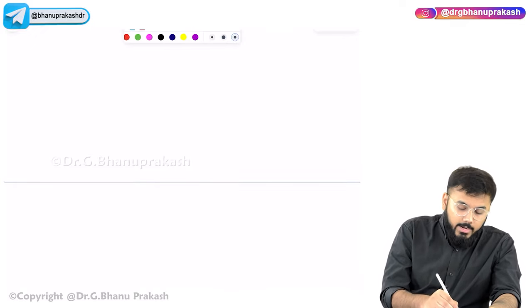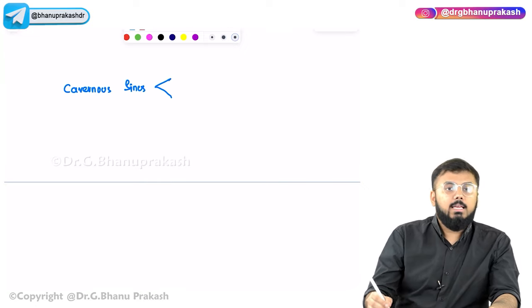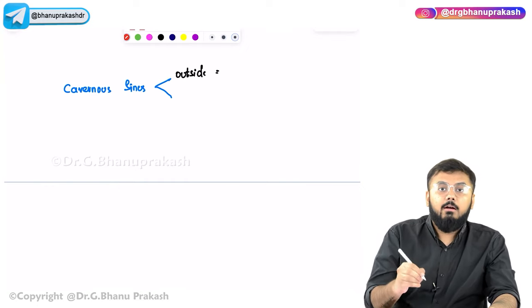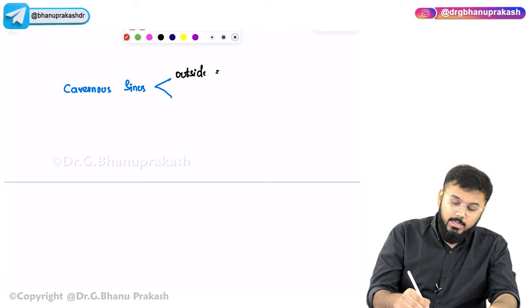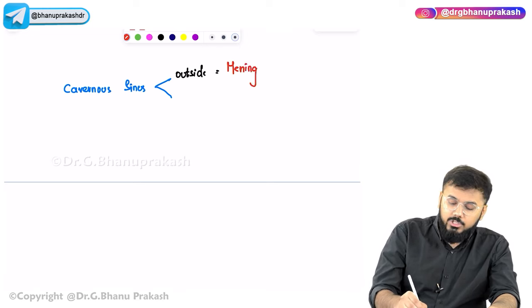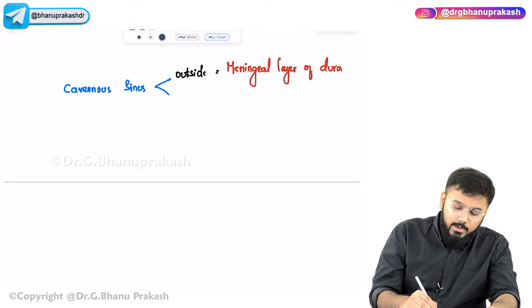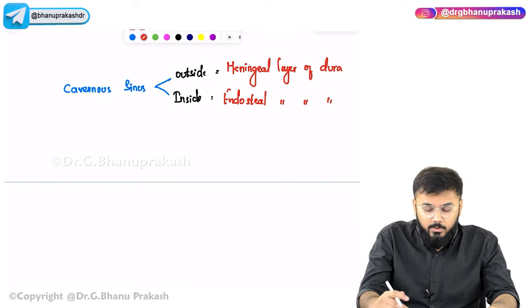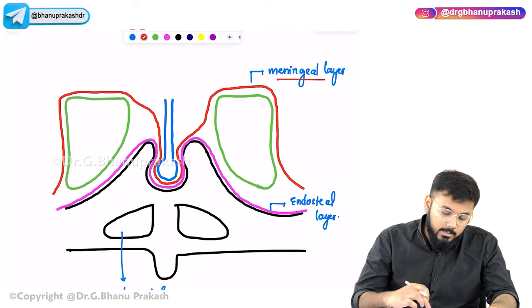Looking at the cavernous sinus in detail: the outer covering is the meningeal layer of the dura mater; the inner covering is the endosteal layer. The central cavity is the cavernous sinus itself. There is also a sphenoid sinus below.